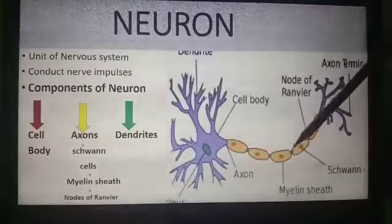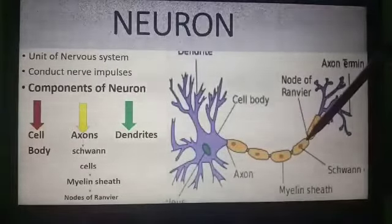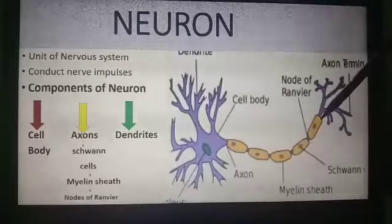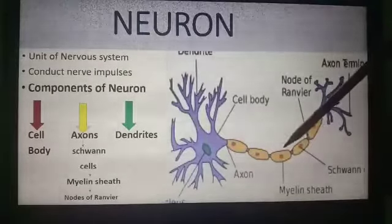Schwann cells secrete a fatty layer around the axon which is called the myelin sheath. This myelin sheath acts as an insulator and does not allow the nerve impulses to pass through it.